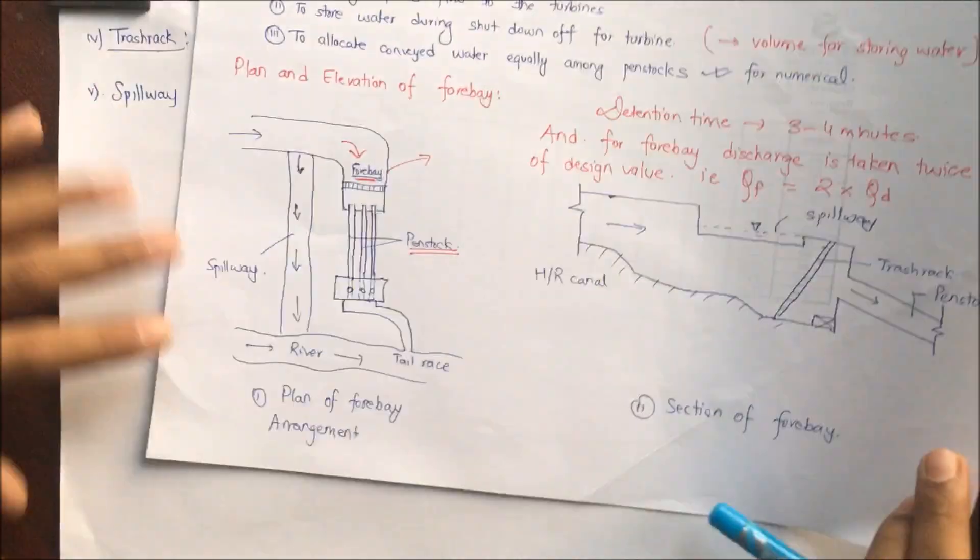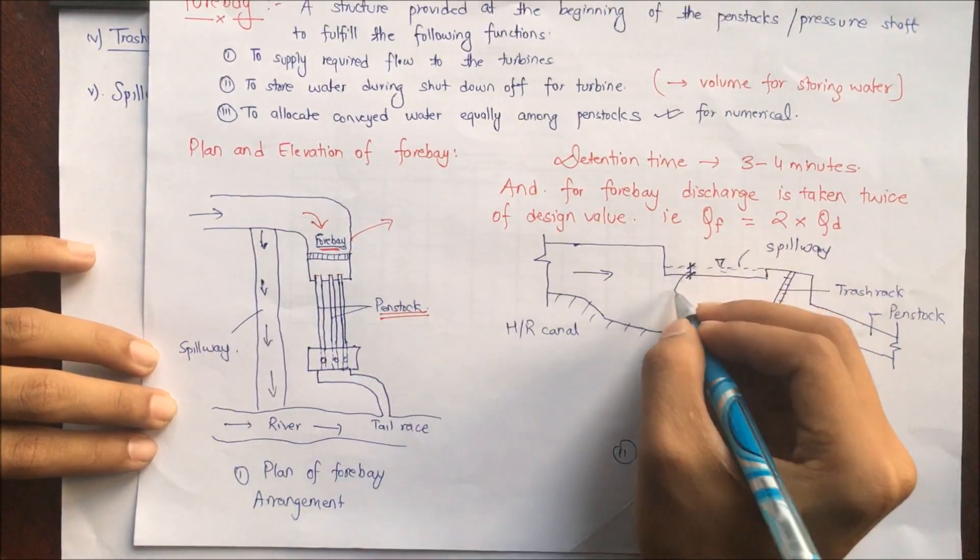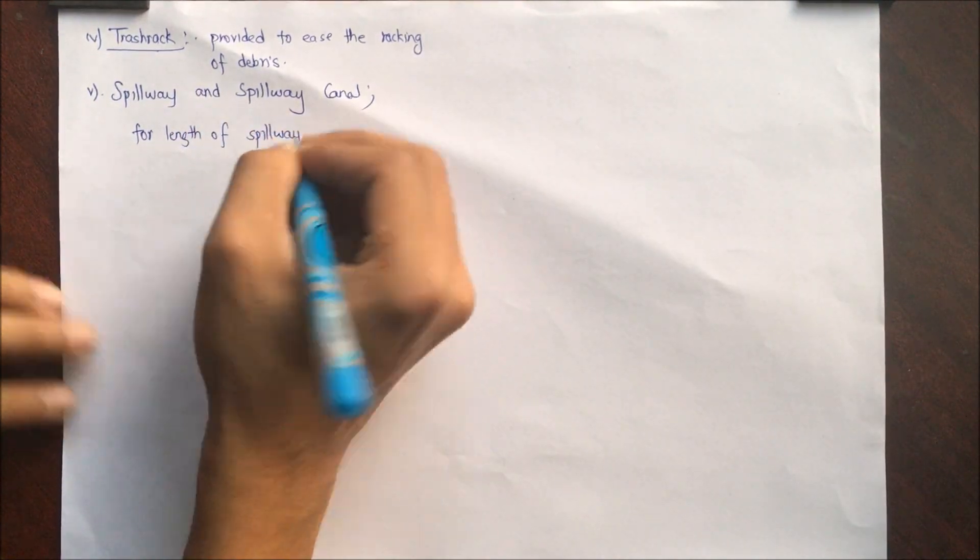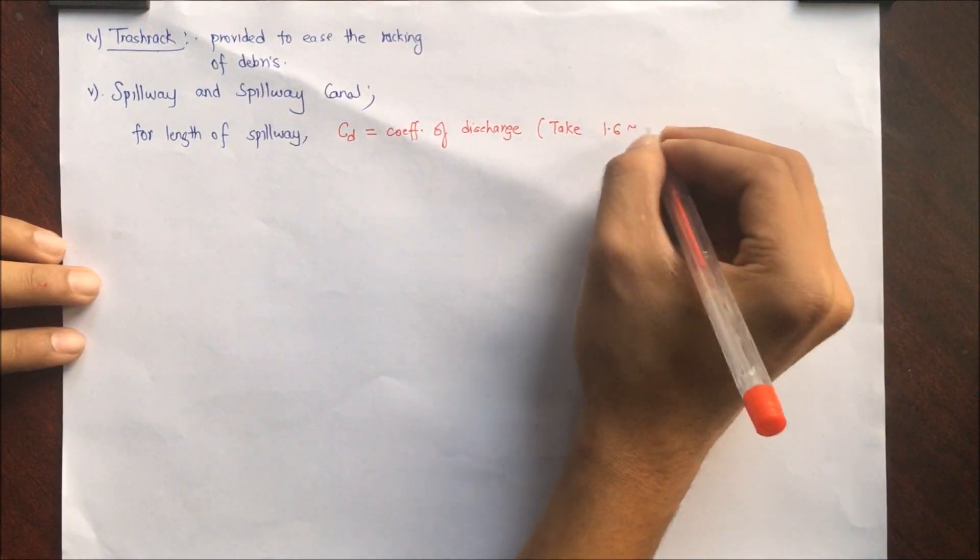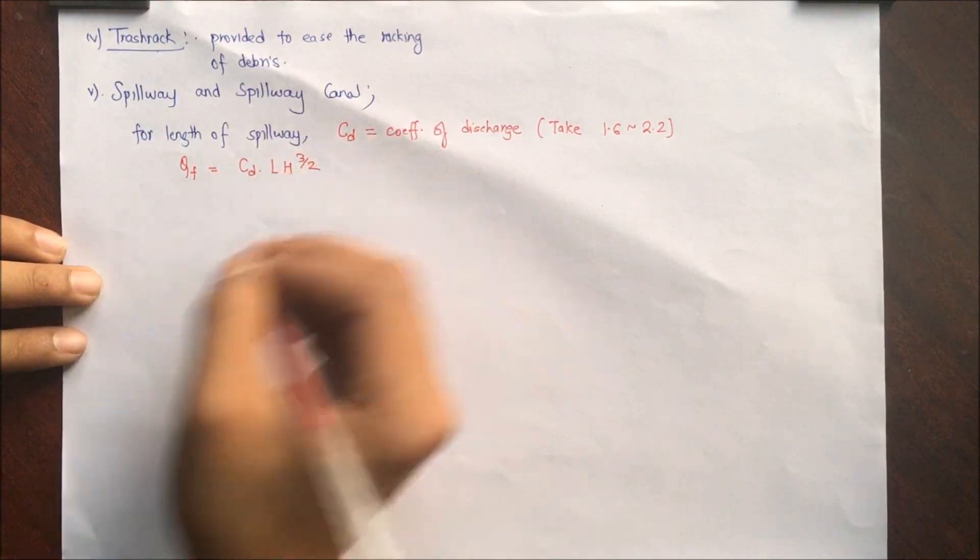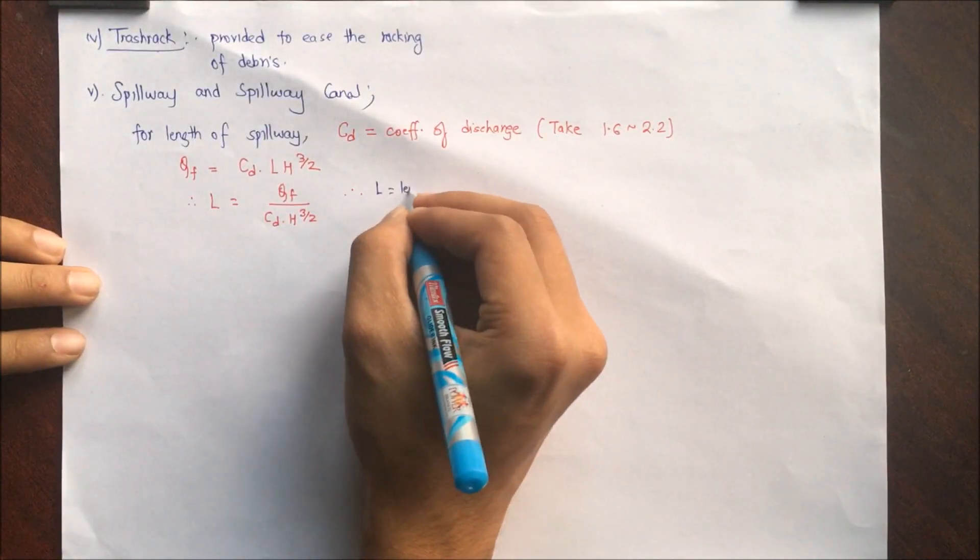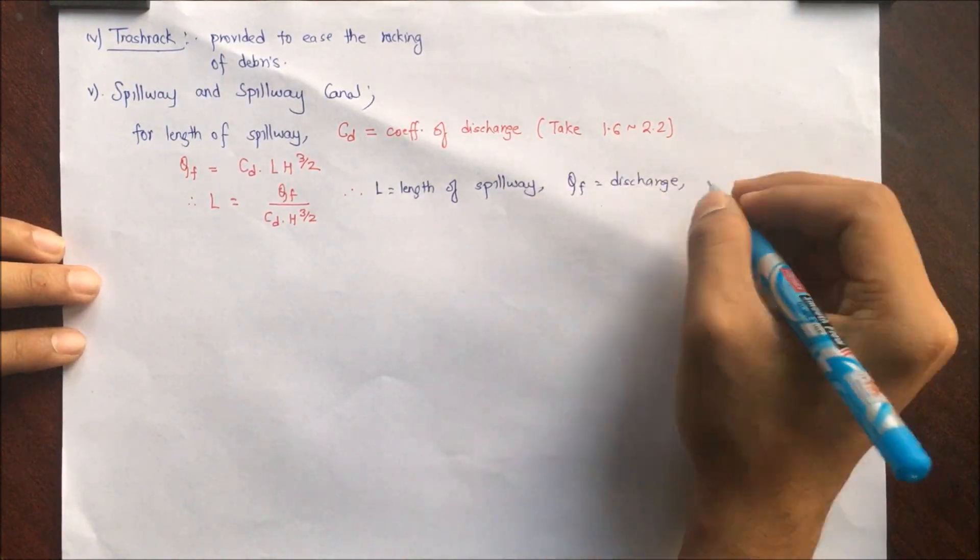For which, this is the spillway and that is the value. As I said, it is generally taken as 0.5 meter, that is height or head over spillway. The length of spillway: taking Cd is coefficient of discharge, generally the value is taken as 1.62 to 2.2. So Qf = Cd × L × H^(3/2), therefore L = Qf/(Cd × H^(3/2)), where L is the length of spillway, Qf is the discharge of forbay, and H is the head over crest.